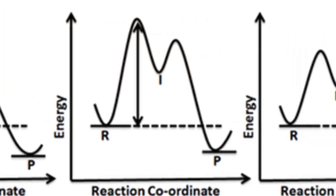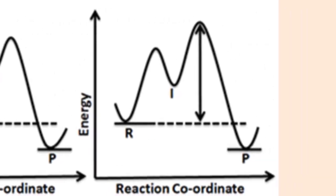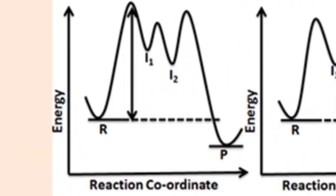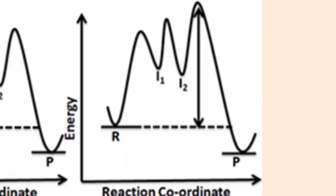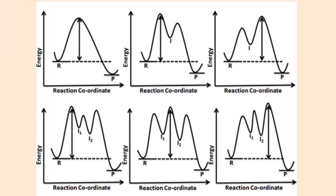The second energy diagram shows two peaks, or two transition states, and one lull, indicative of at least one intermediate. The arrow associated with the first peak is the activation energy for the first transition state, associated with the slow step. The third energy diagram shows a similar situation: two transition states and at least one intermediate. The fourth shows three transition states and at least two intermediates. The fifth and sixth energy diagrams are similar — three transition states and two intermediates. All of these reactions are exothermic in the forward direction.